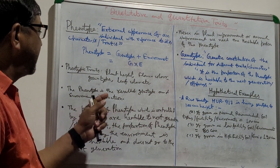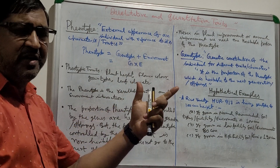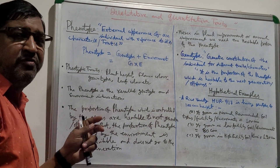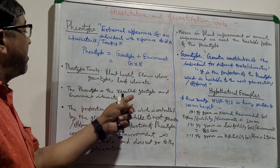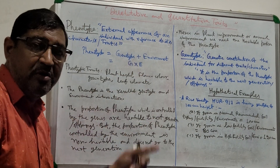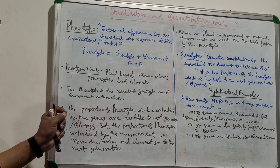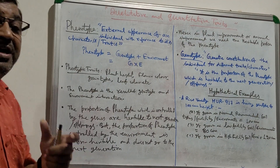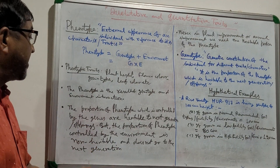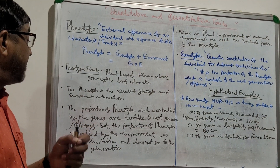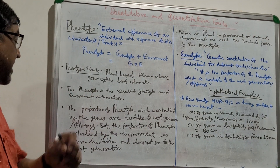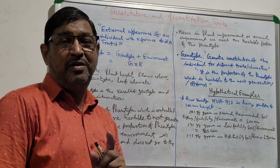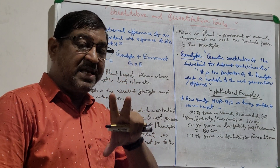Phenotypic traits include plant height, flower color, grain type, leaf color, etc. The phenotype is the result of genotype and environment interaction. The proportion of phenotype which is controlled by genes is heritable to the next generation or offspring, but the proportion of phenotype controlled by the environment is non-heritable and does not go to the next generation.